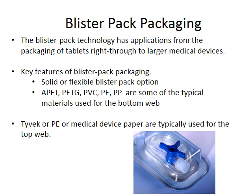Blister pack packaging — these are what you would commonly see if you buy a pack of paracetamol tablets and you pop the pill out through a foil back. The bottom web is usually a hard plastic casing, transparent so you can see the contents. These could be solid or flexible — usually some sort of polyethylene, PVC, or polypropylene. Then on the top web you could have Tyvek.